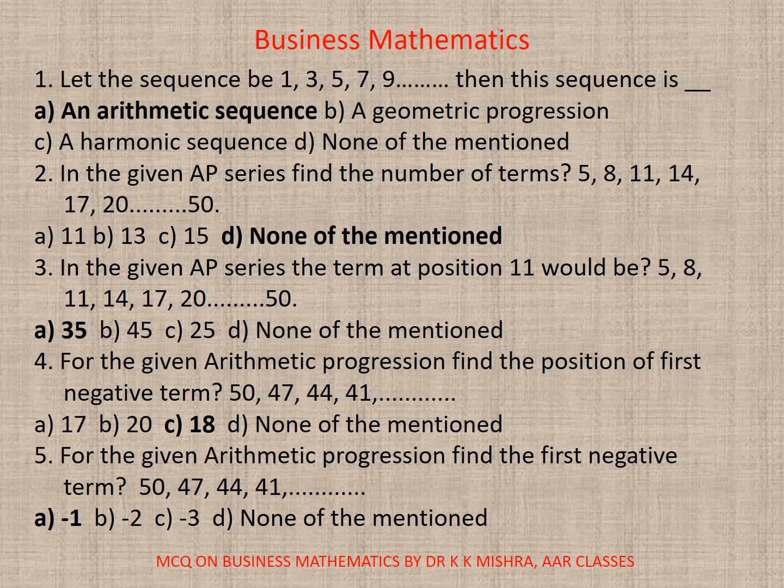Question number 1. Let the sequence be 1, 3, 5, 7, 9, etc. Then this sequence is: A, an arithmetic sequence, B, a geometric progression, C, a harmonic sequence, or D, none. Here correct option is A, an arithmetic sequence, because you can see here that the difference is the same. 3 minus 1 is 2, 5 minus 3 is 2, 7 minus 5 is also 2. So this is obviously an arithmetic sequence.